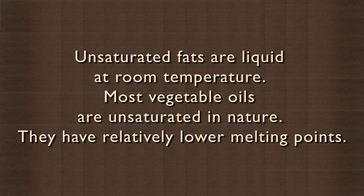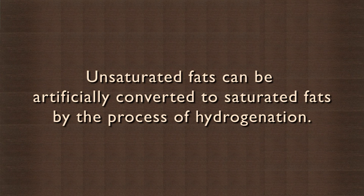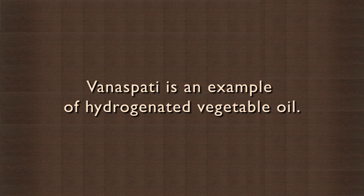Unsaturated fats are liquid at room temperature. Most vegetable oils are unsaturated in nature. They have relatively lower melting points. Unsaturated fats can be artificially converted to saturated fats by the process of hydrogenation. Vanaspati is an example of hydrogenated vegetable oil.